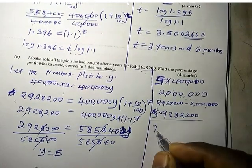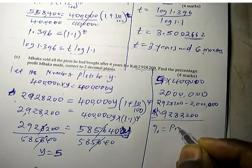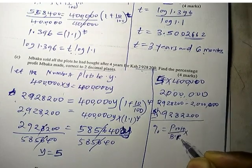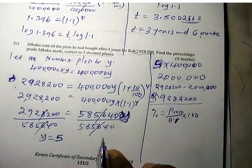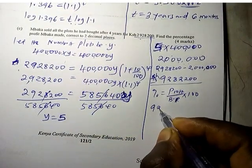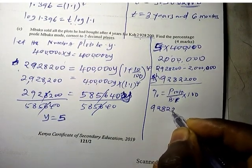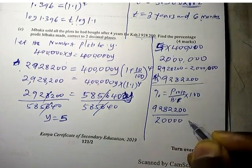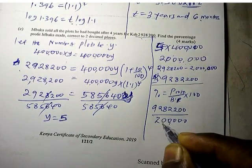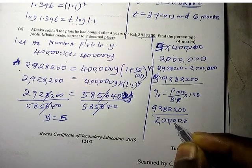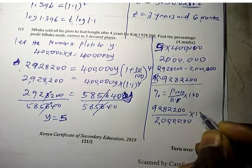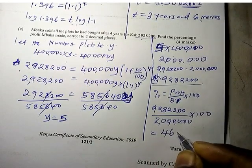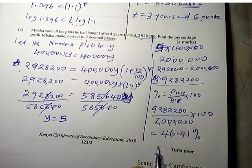So percentage profit equals profit divided by buying price, original price, times 100, which is 928,200 divided by 2 million times 100. And that gives us 46.41%.